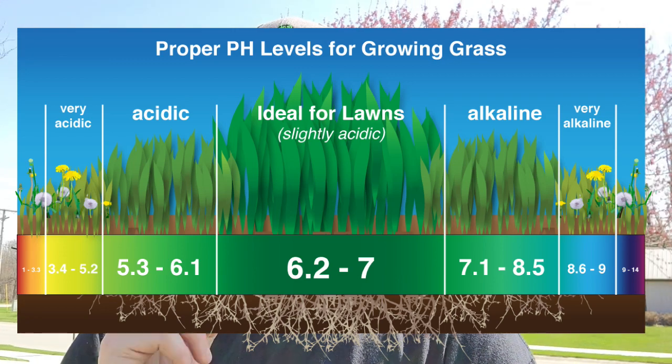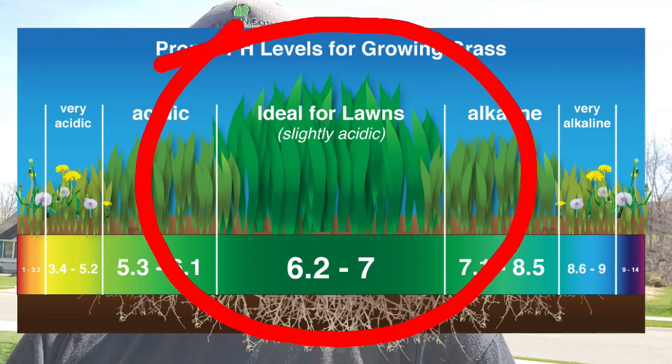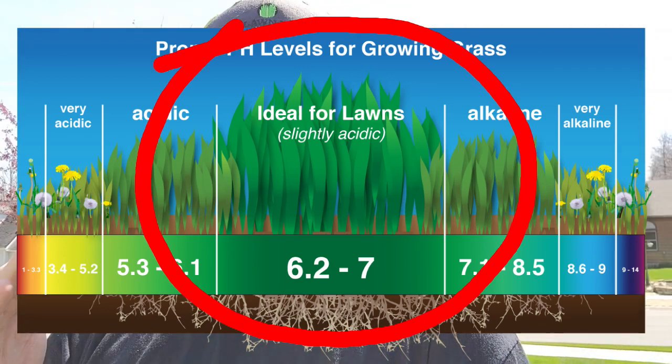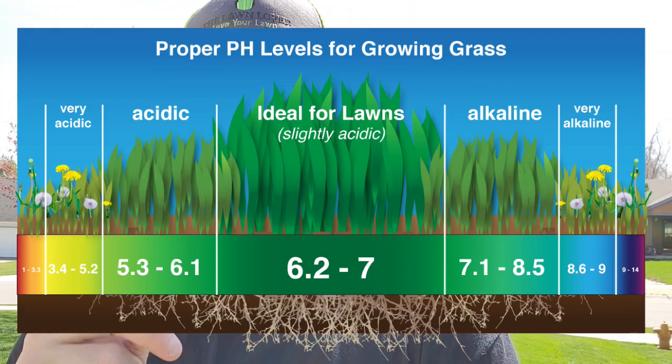pH is probably where you're going to want to start. The ideal range for your soil pH is going to be between 5.8 and 7. Anything over 7 you're going to have alkaline soil; anything below 5.8 you're going to have acidic soil. Both conditions will make it difficult for your grass to thrive.